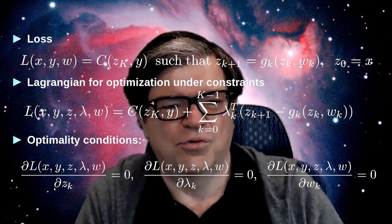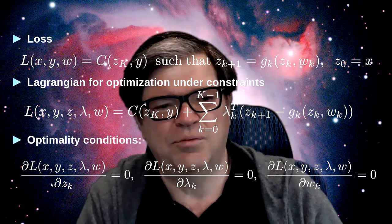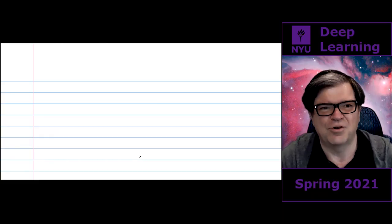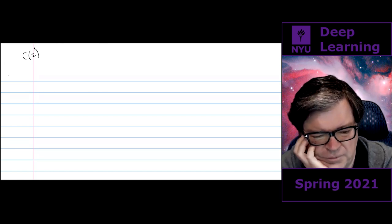The optimality conditions for Lagrange optimization are: we want to find values for z, lambda, and w such that the gradients of this function with respect to z, lambda, and w are all zero. There are three conditions: derivative with respect to zk equals zero, derivative with respect to lambda k equals zero, and derivative with respect to wk equals zero. This kind of optimization is a saddle point optimization - we're looking for a minimum with respect to z and w, but a maximum with respect to lambda.